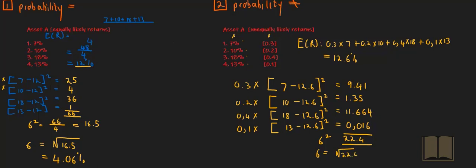But we're not looking for the variance — we're looking for the standard deviation. The standard deviation is simply just the square root of the variance, which gives you a standard deviation of 4.74%.